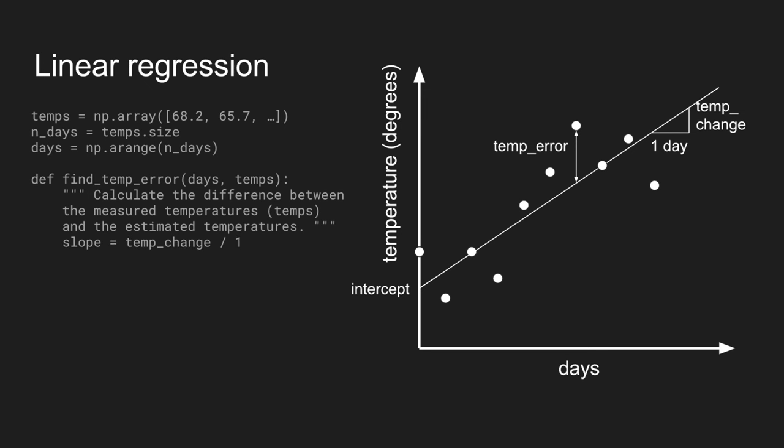Where first we calculate the slope, which is this temp change over days per day. And then our estimate of the temperature on any given day is just this equation of the line. y equals b plus mx or a plus bx or however you write it.